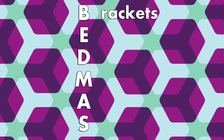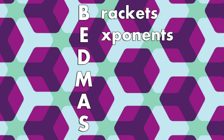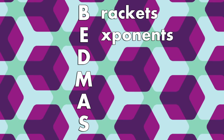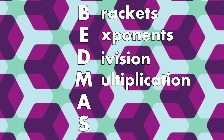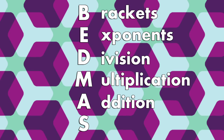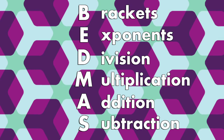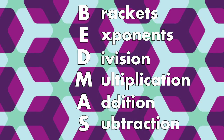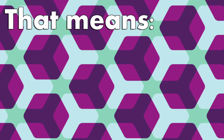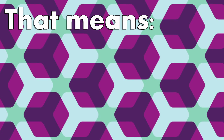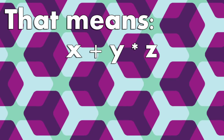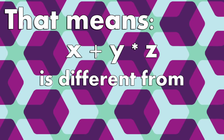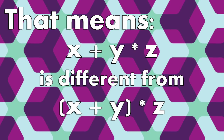If you use more than one operator at a time, Java will follow the rules of BEDMAS: brackets first, then exponents, followed by division, multiplication, and then finally addition and subtraction. It works from the left of the line to the right. Because of this, this statement is different from this statement.